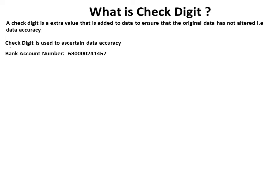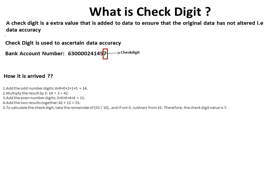So this is a 12-digit bank account number. The first 11 digits are the actual bank account number, and the 12th digit — that is, the seven — is the check digit. Let us understand how this seven is arrived at. It is derived from the algorithm that is applied to the first 11 digits. For the CISA exam, we need not remember how this algorithm works; this is basically for our understanding.